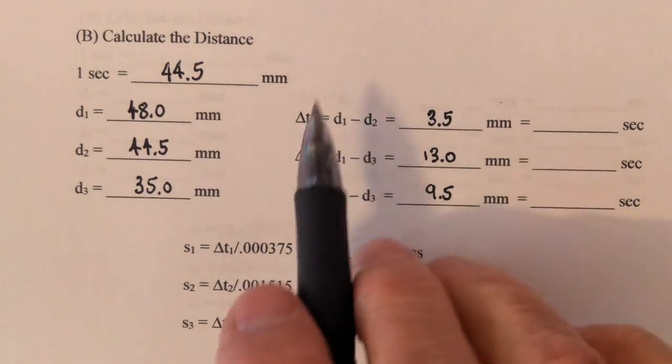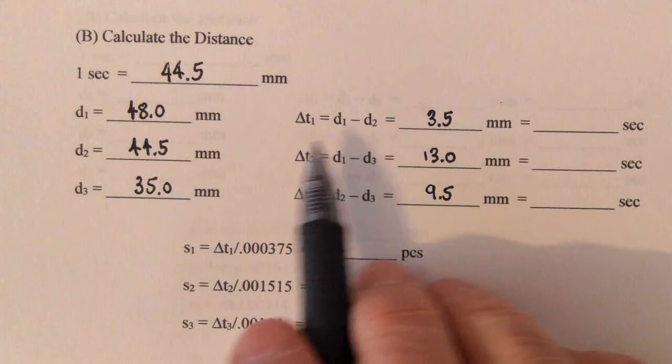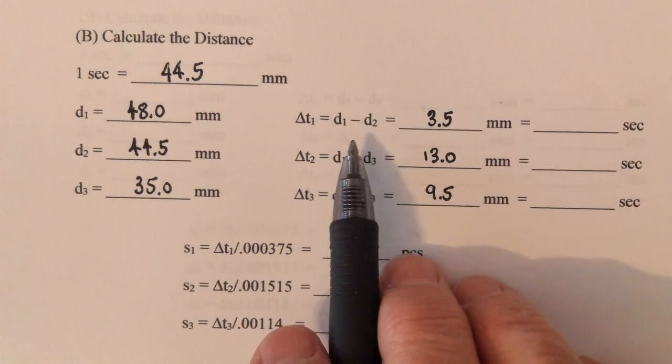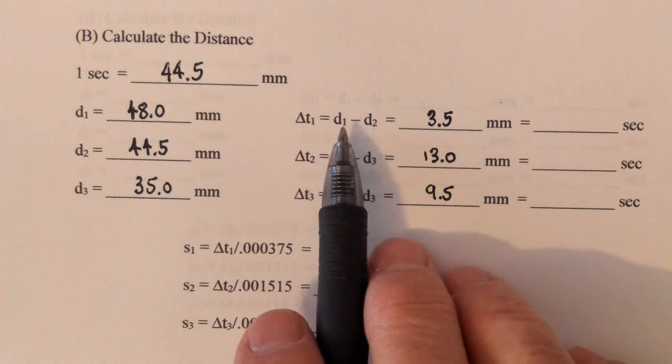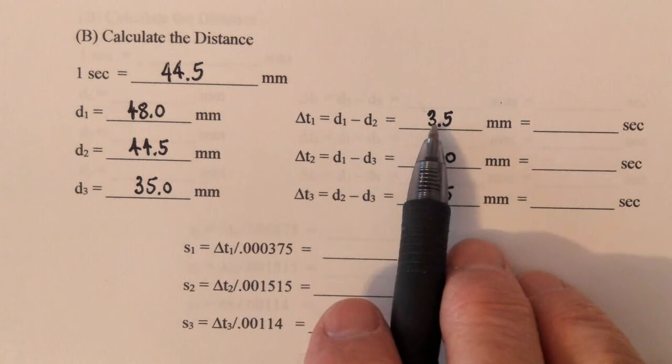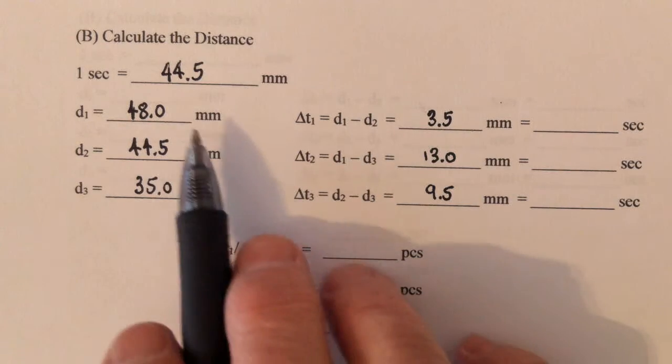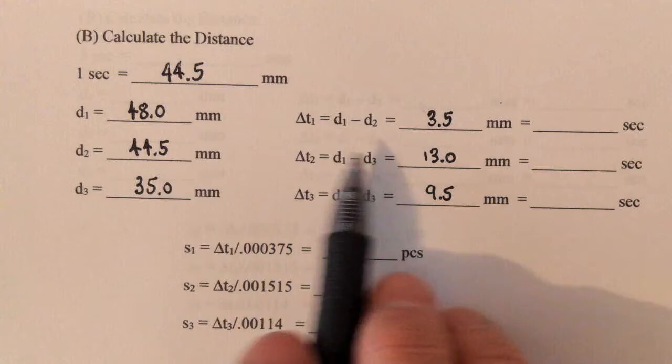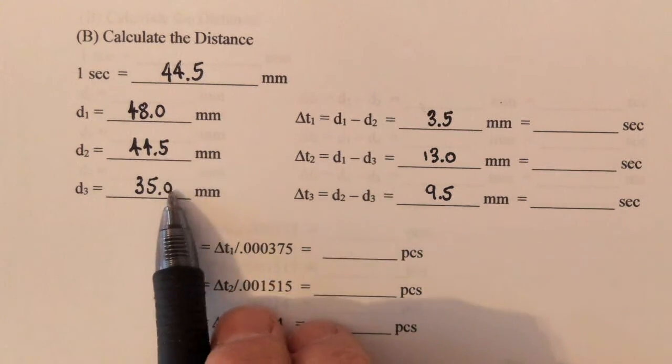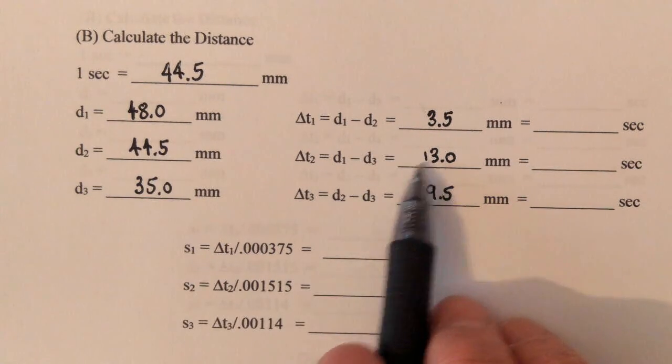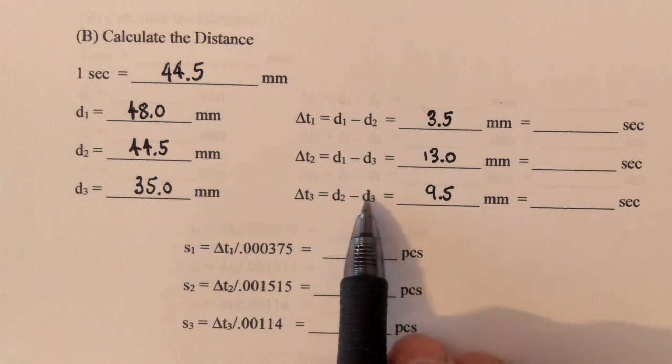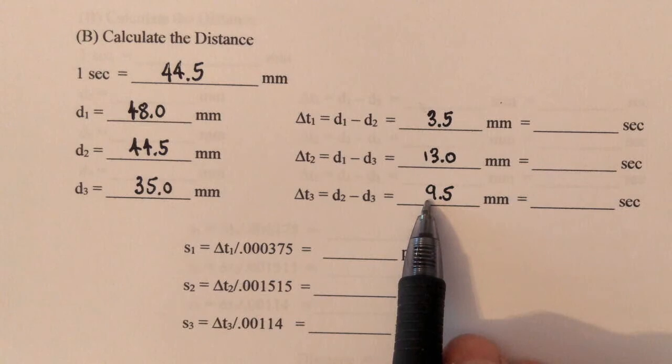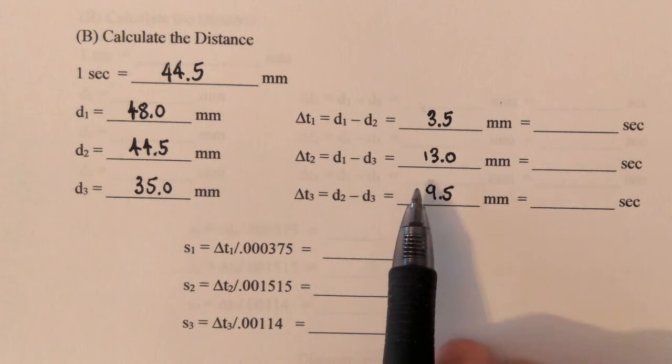So if you just learn to read this, and on a test you'd have these same instructions, same numbers, it would look just like this. Take D1 minus D2, that's 3.5. Take D1 minus D3, 48 minus 35, that's 13. And then D2 minus D3, 44.5 minus 35, that's the 9.5.